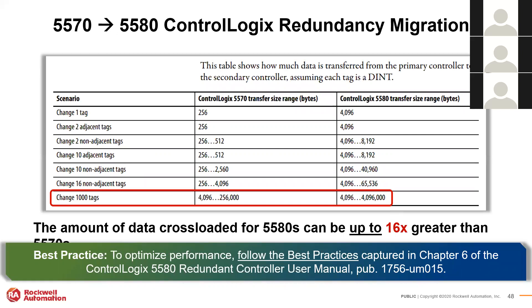An example from the manual shows the difference in how much data is used during cross-loading. In a 5570, the range is 4096 up to 256,000 bytes depending on efficiency. If the controller's data management is not efficient, the amount of data transferred during cross-loading can increase significantly. This wraps up the presentation — anyone implementing a 5580, new or migrating, should keep these best practices in mind to get the best result.